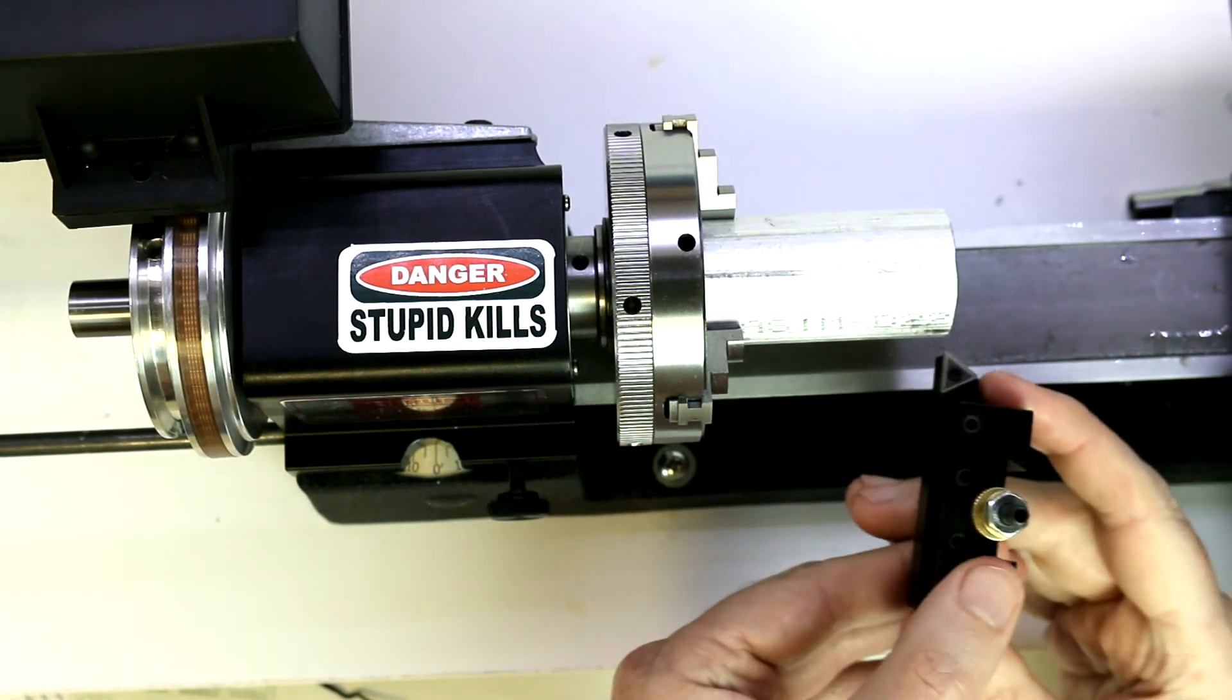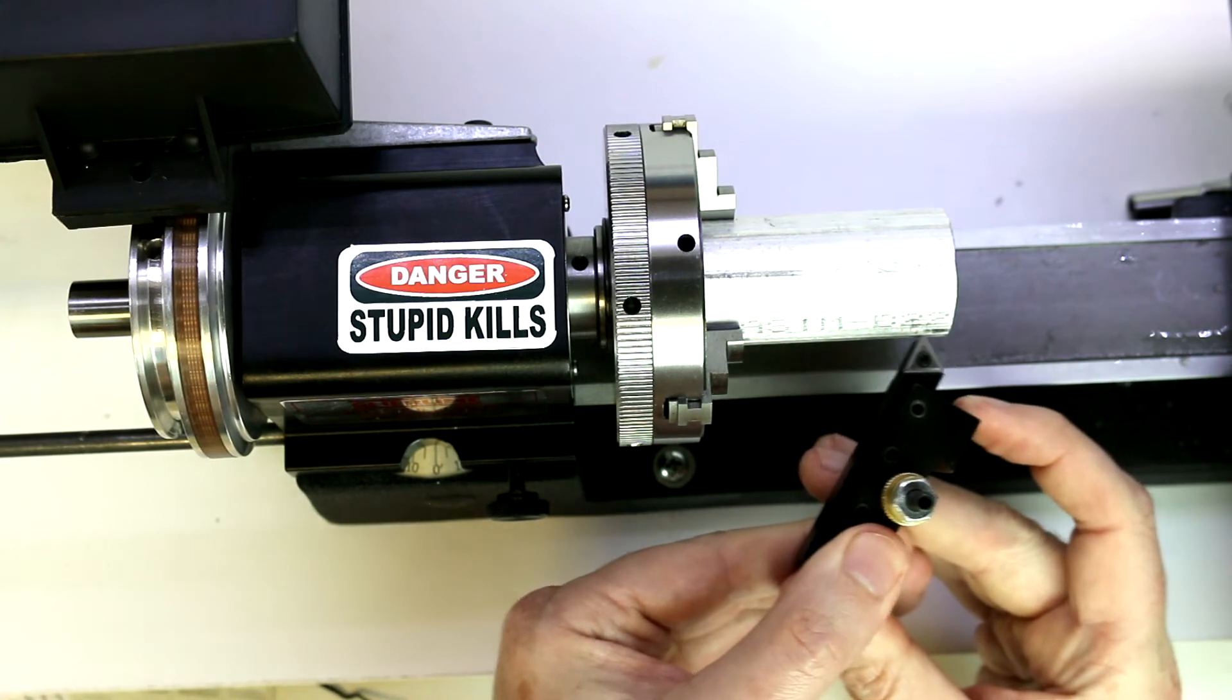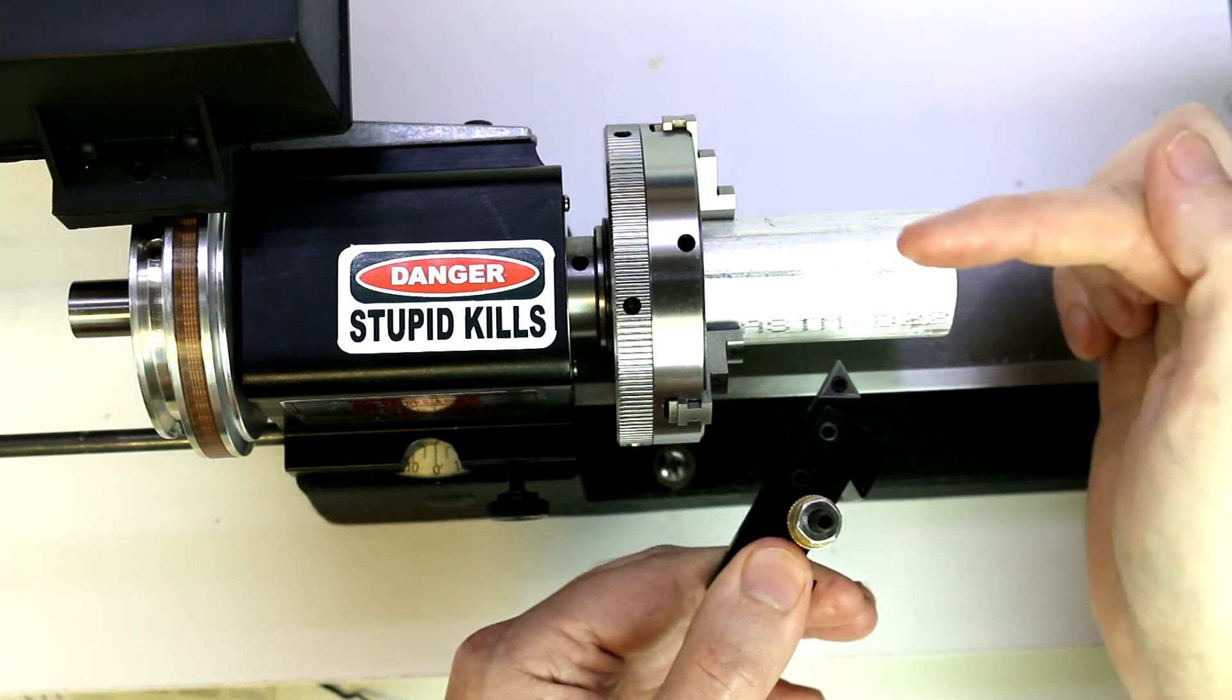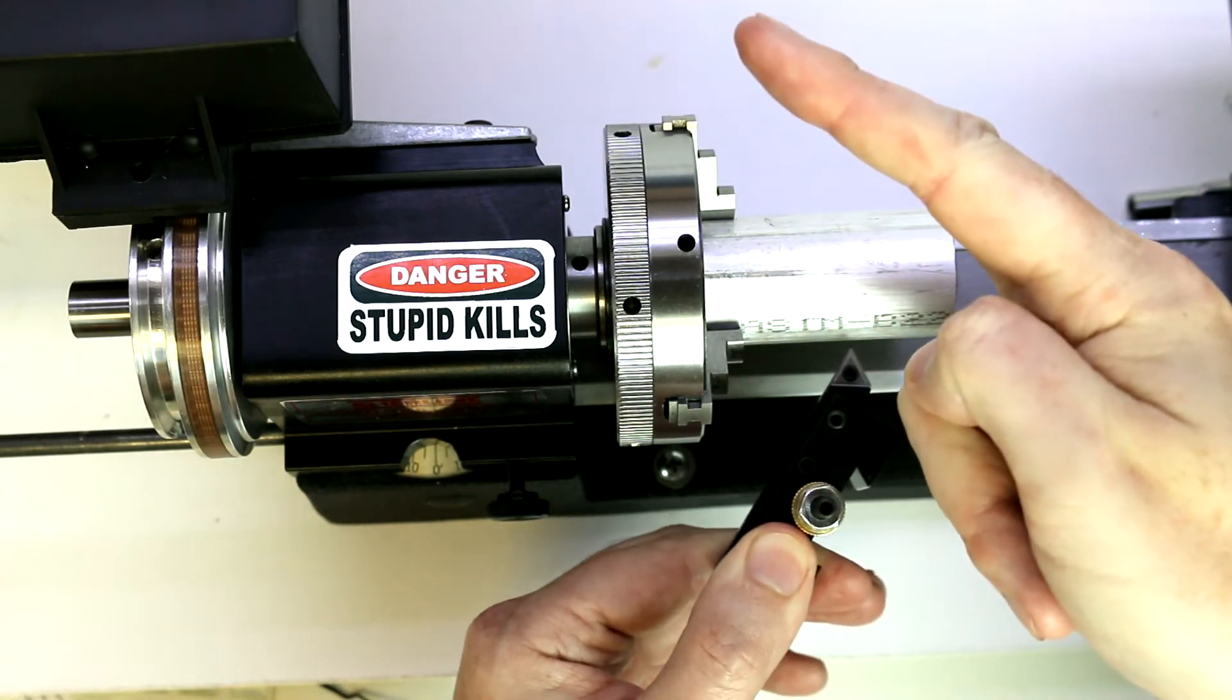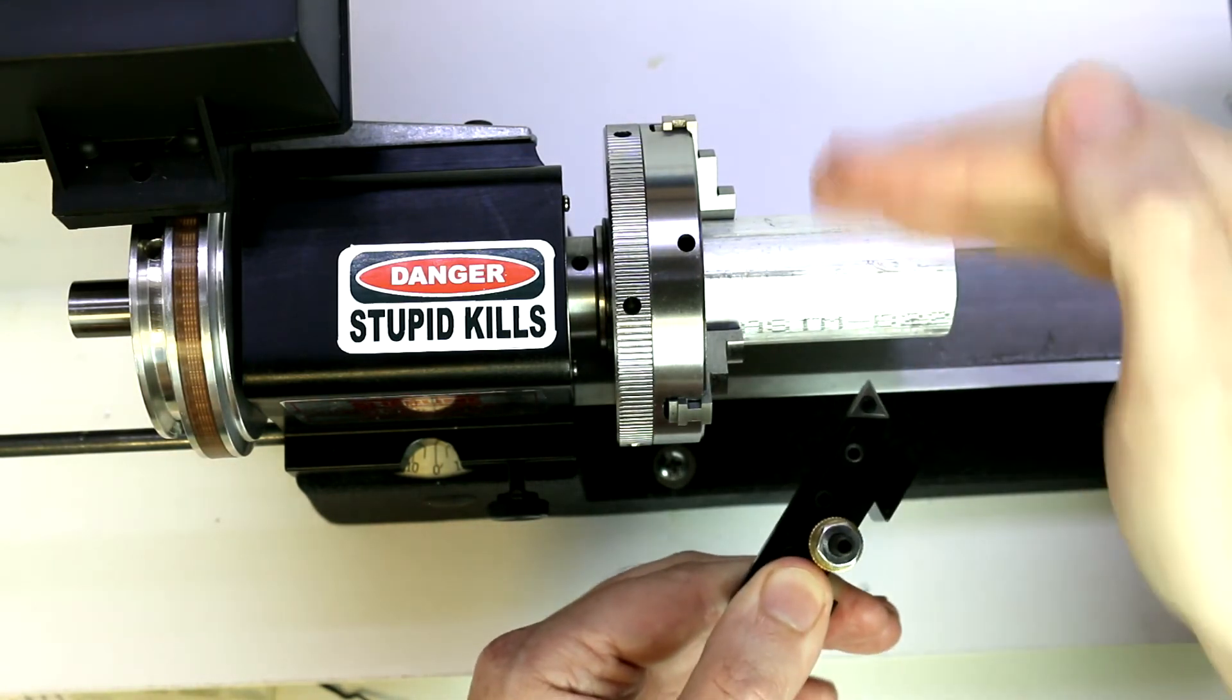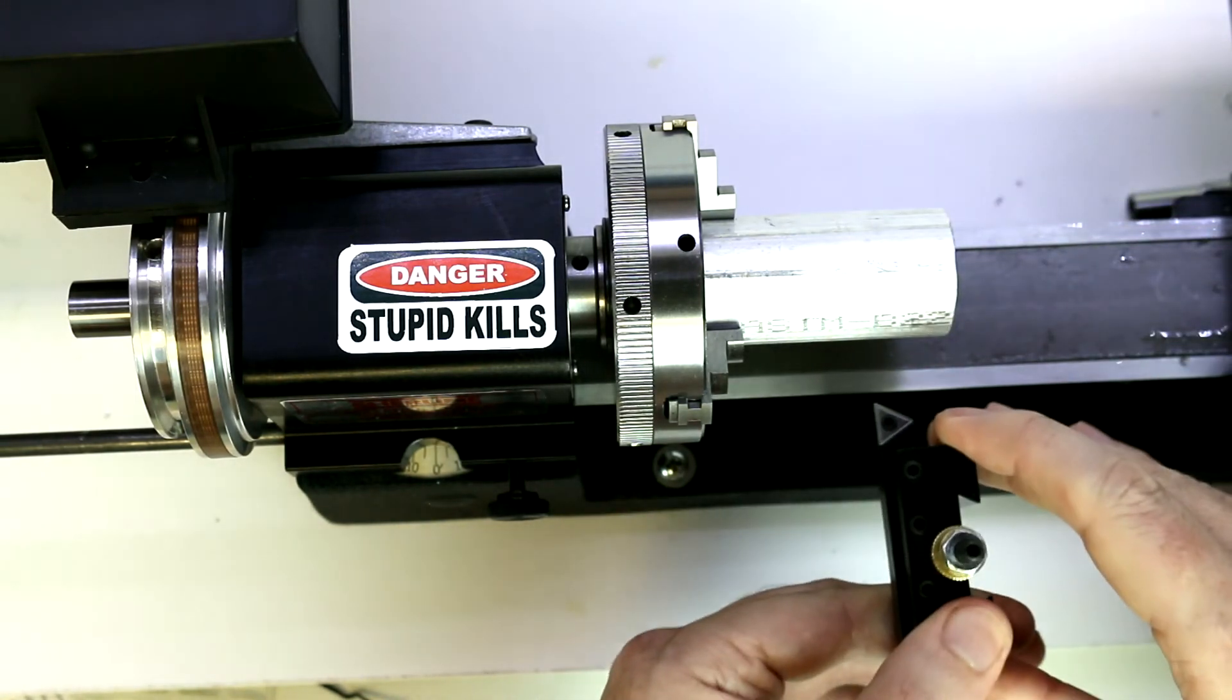Now if we were to do more of a roughing cut and cut at an angle, now we've changed those tool forces. Now that tool force is not only going to the left, but we are definitely putting more to the back. Something to keep in mind on how the piece may flex is the angle of your cutter.